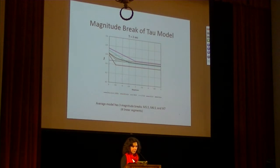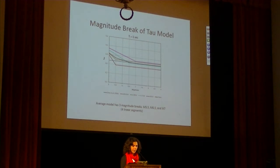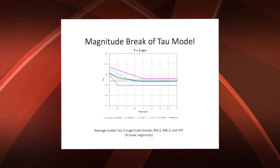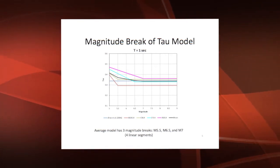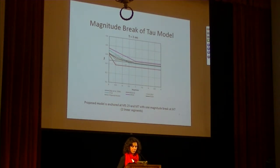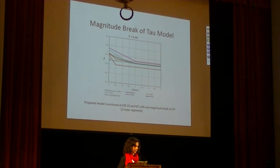When we look at the tau models versus magnitude at a period of one second, we see that the NGA West 2 models break at different magnitudes, and Zhao is constant with magnitude. When we simply average the variances of the five, we get a model with three magnitude breaks and four linear segments. To simplify it, we take one magnitude break at 7 and the other at 5.25. The proposed model is the dashed line, which overestimates slightly for magnitudes between 5.25 and 7, and underestimates a little bit for magnitude less than 5.25.